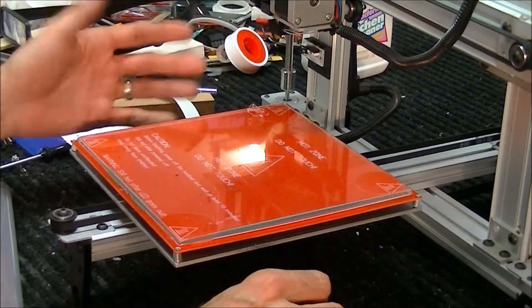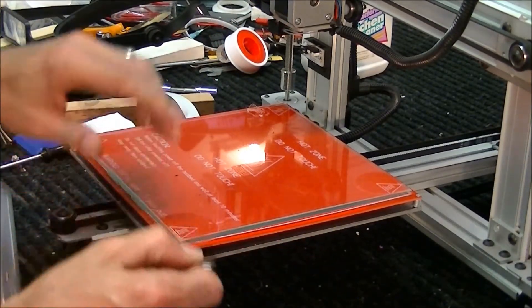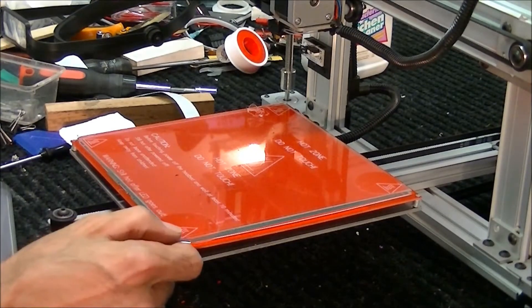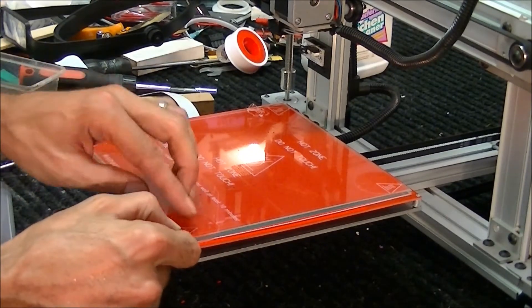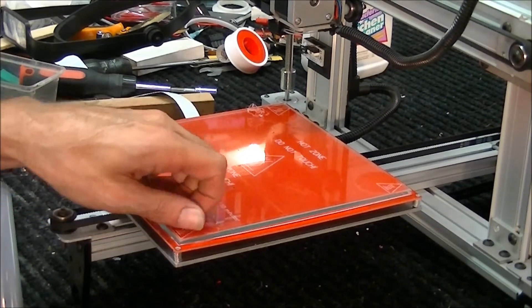Just raise your Z-axis up to give you a little bit of clearance and then just take a razor blade. I've got the bed heated up to about 60 right now. Just go to one of the corners and start lifting it up. It should peel right off.